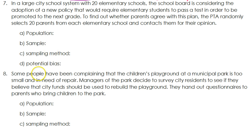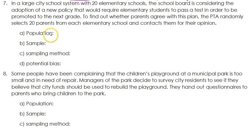Let's talk about some of the vocabulary. Reading this scenario, we need to identify the population, the sample, the sampling method, and any potential bias. Let's start with the population — the population is whoever is the group of people, animals, or objects that you're interested in learning about.